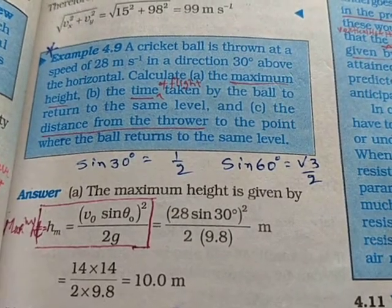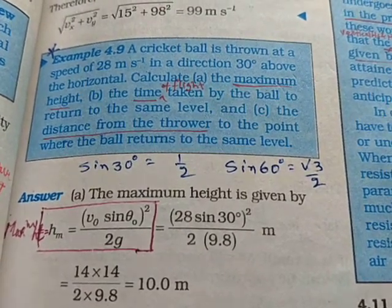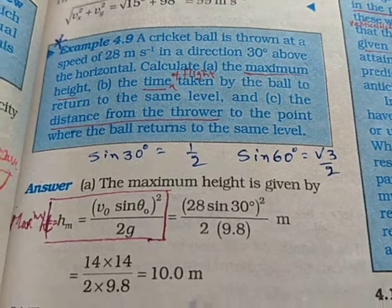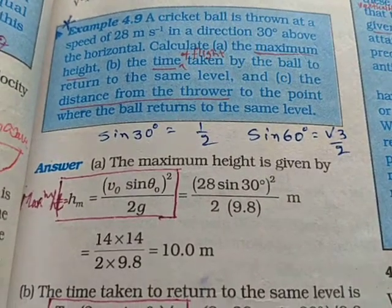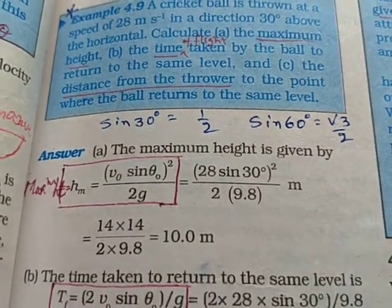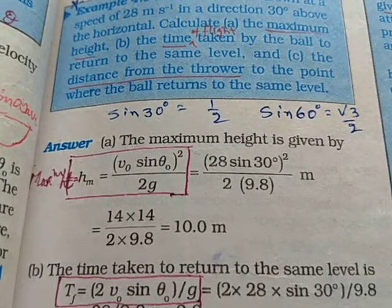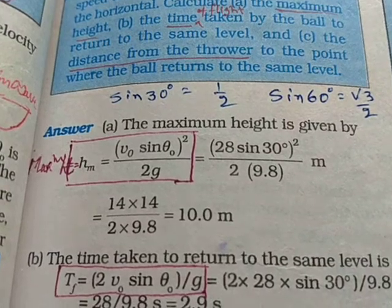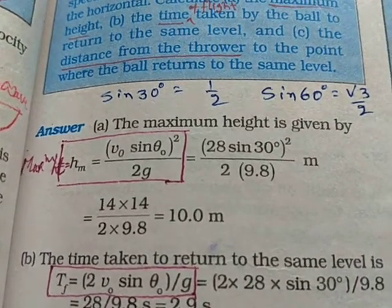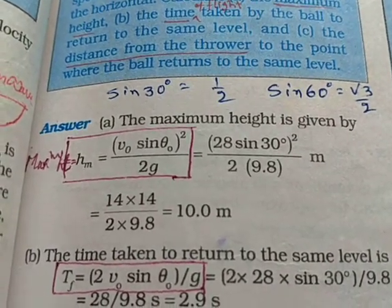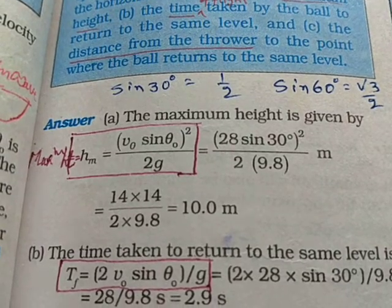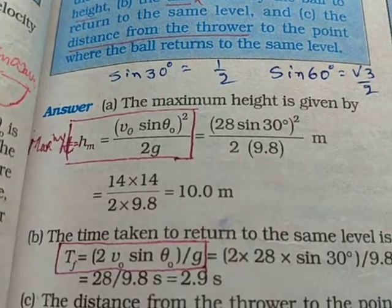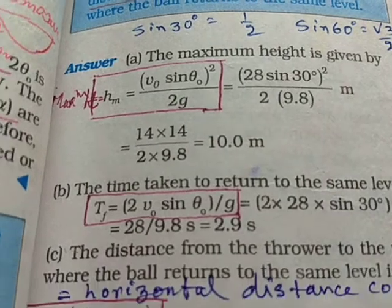And that is the speed of the projectile at the time of projection. And so the maximum height covered by the projectile we know is given equal to V₀² sin²θ by 2g. And on putting the value of V₀ sin θ as 28 sin 30 degrees divided by 2 into 9.8, that becomes 10 meters.